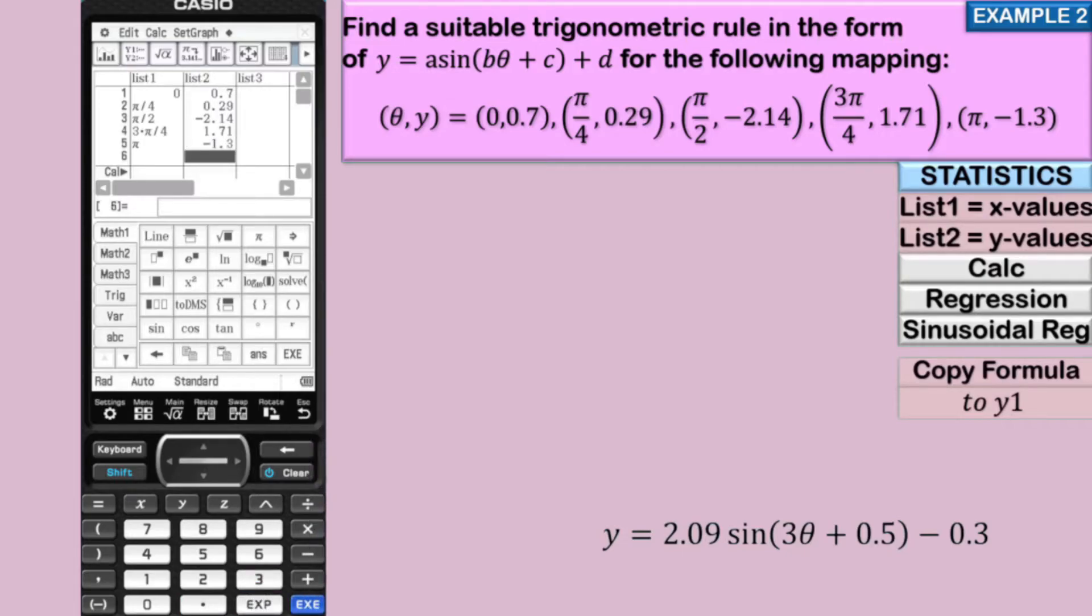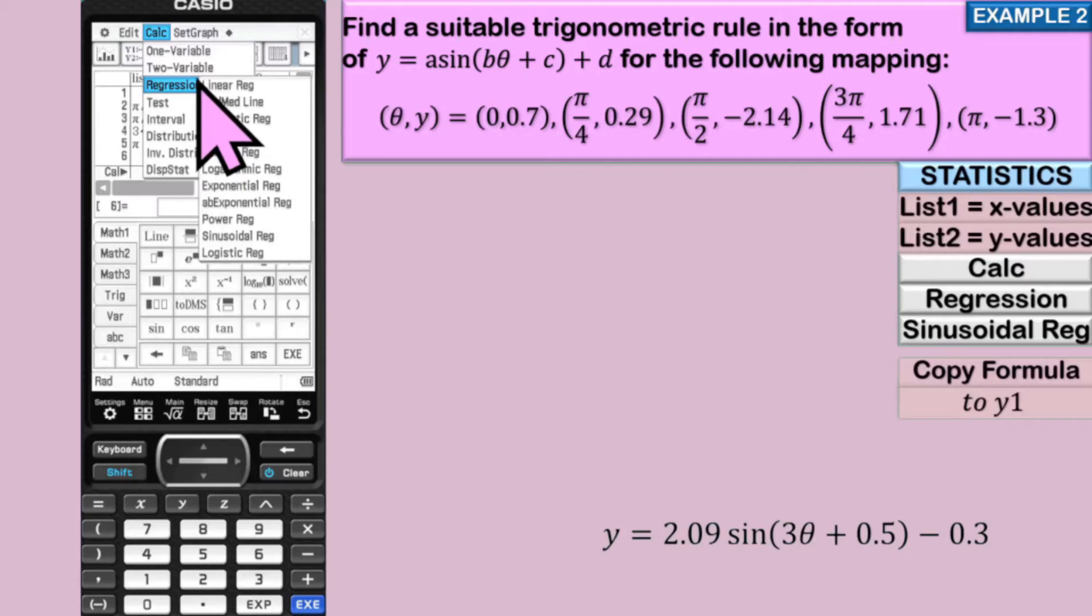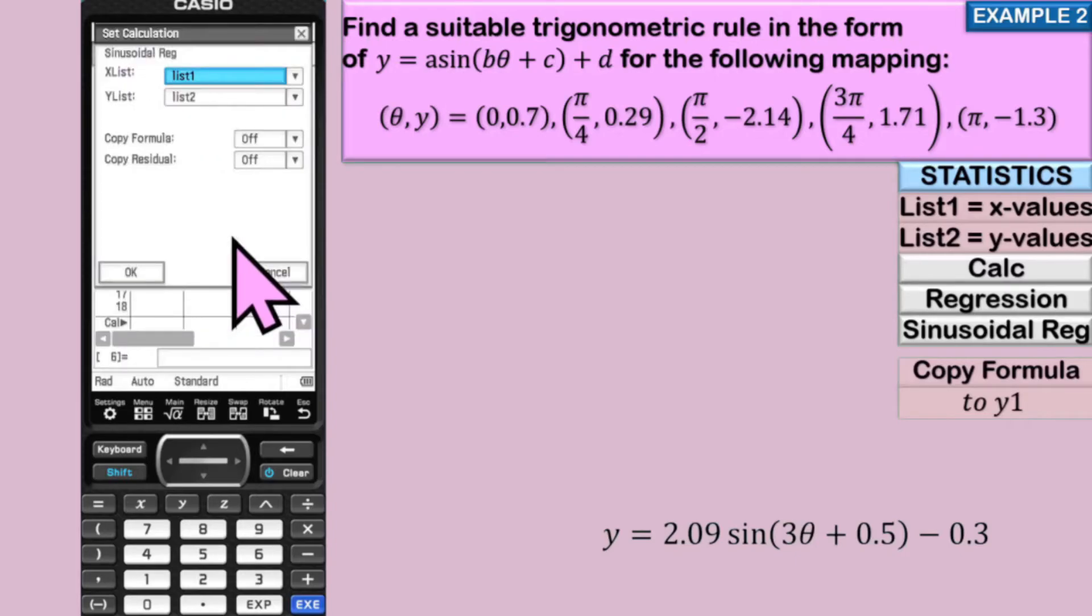Then we're going to go to calc up here. Then we're going to click on regression. That's going to help us calculate the equation. And we want sine. So we look for sine. There it is. And we're okay with all of this. Copy formula to y1. And we do that because it's going to remember the equation as y1, so we can use it to graph if we wanted to. Okay.